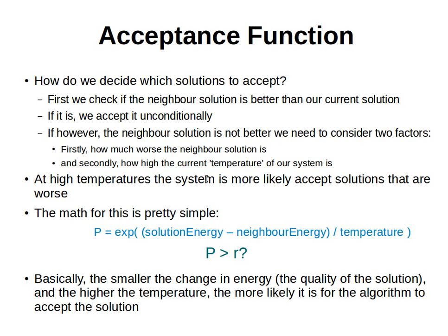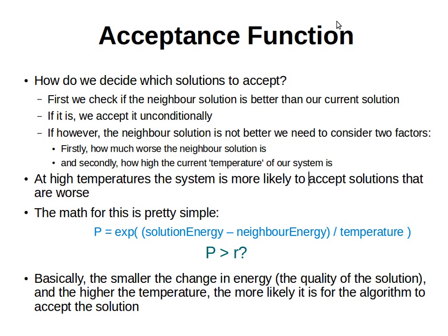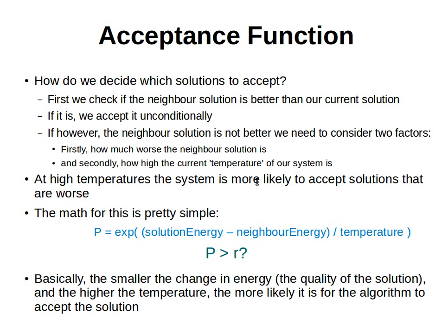At high temperatures, the system is more likely to accept solutions that are worse than the current solution. The math for this is quite simple. We compute a probability value P, which equals e to the power of the cost of the current solution minus the cost of the new neighboring solution, divided by the current temperature of the system.